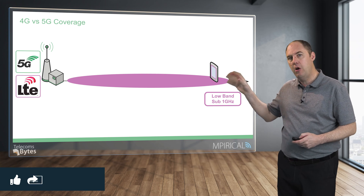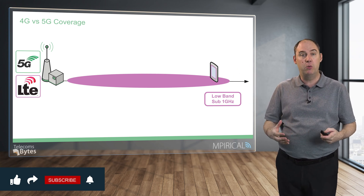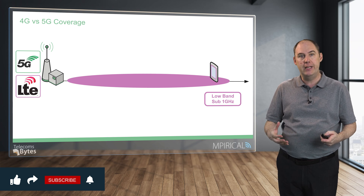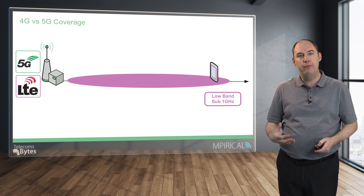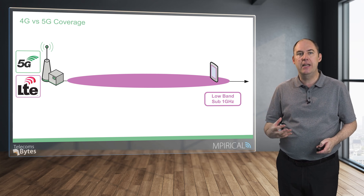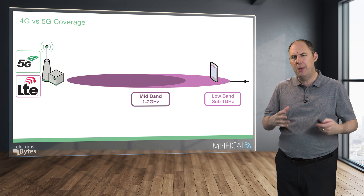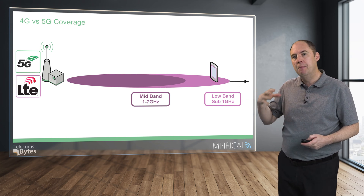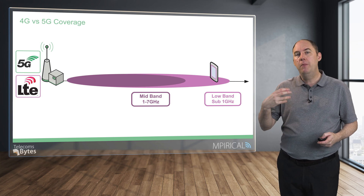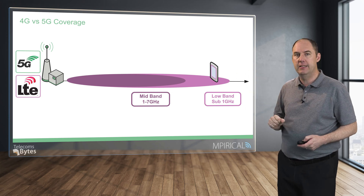In this example, the low band signal goes the furthest, and most service providers around the world have 4G networks operating on a low band. However, the majority of capacity and a lot of networks focus on the mid band frequencies, typically 1, 2, 3 GHz. Here we get good coverage, but also a lot of high data rate capabilities. This is our 4G system.